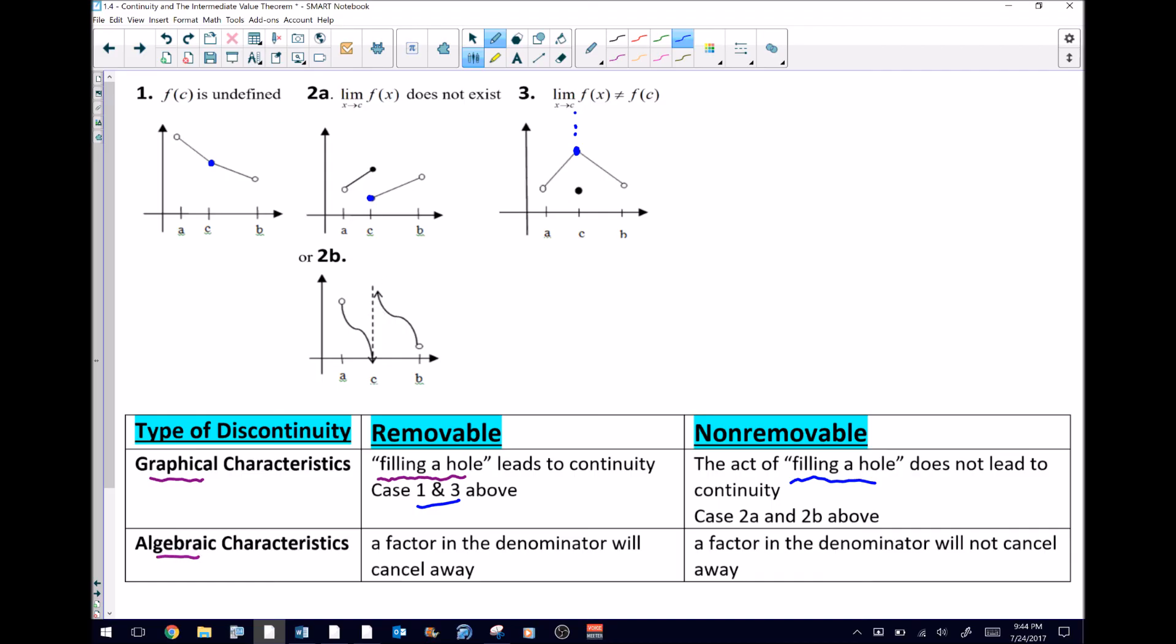When you've got an algebraic representation, when you're not dealing with a graph and you don't really care to make a graph, then it's a little bit trickier, but it does have a pretty clear sort of division between removable versus non-removable. A removable discontinuity is simply a factor in the denominator that will cancel. So the idea of having something in the denominator is going to cause a discontinuity, but if that particular factor cancels away through some type of fraction reduction, then it's going to be a situation where you have a removable discontinuity.